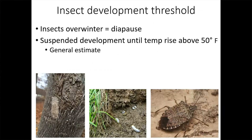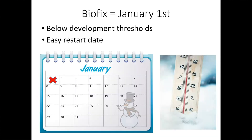Insects overwinter and are inactive in different life stages depending on the species. On the left here is the spotted lanternfly egg case — that's how it overwinters, and it's a new invasive species. Japanese beetles overwinter underground as larvae, and stink bugs overwinter as adults. We've found there's a general estimate that most insects will not have any development or activity until temperature rises above 50 degrees. That's our base temperature for insect activity, and for degree days we have to have a starting date when we begin tracking heat units — we pick January 1st, because in January it's typically not above 50 degrees.